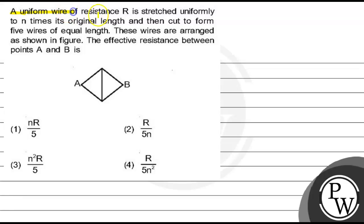A uniform wire of resistance R is stretched uniformly to n times its original length and then cut to form 5 wires of equal length. These wires are arranged as shown in figure. The effective resistance between points A and B.